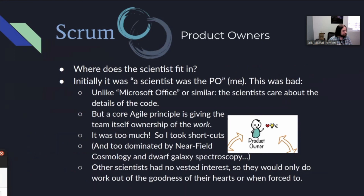They have to fit in somehow, because for a team that has to worry about science and how the scientists see the code, the scientists have to be involved in some part of the process. When this team first started adopting Scrum, the initial thought was that a scientist would be the PO. That should be easy — it seems very straightforward. But this turned out to be bad. And this was me, by the way — I was tasked to be the PO for this team. The first and clearest reason is that unlike something like Microsoft Office, a well-defined application where you can state these are the features we want,